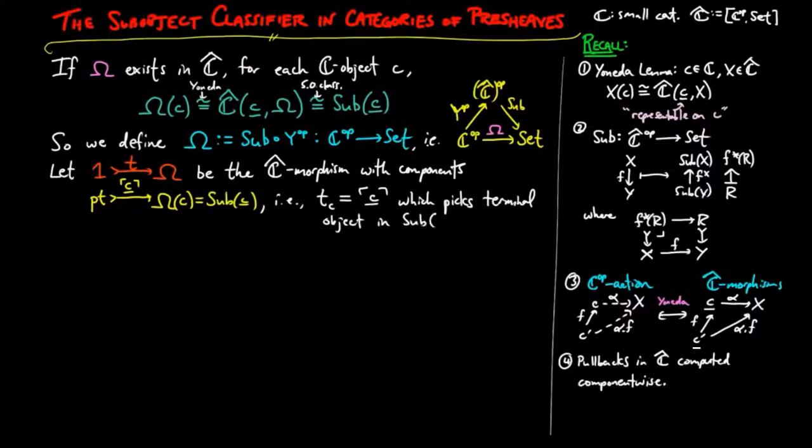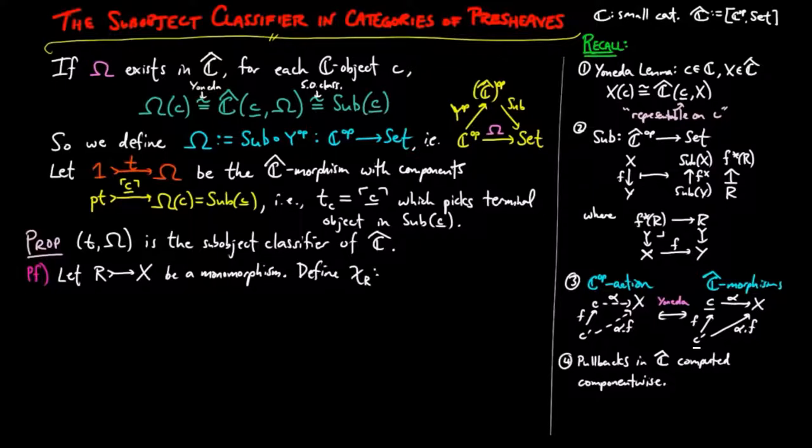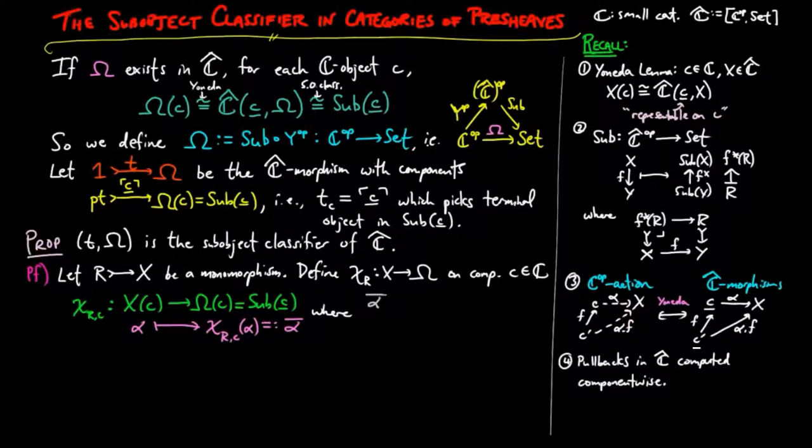We now prove that T omega is the sub-object classifier of C-hat. So let R be a sub-object of X. Define chi sub-R on component C by taking a C-figure alpha to the sub-object alpha bar of the representable on C, where alpha bar has C-prime figures consisting of C-morphisms F from C-prime to C, such that the F-boundary of alpha is a C-prime figure of R.